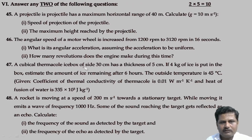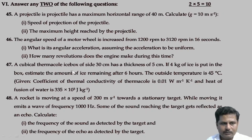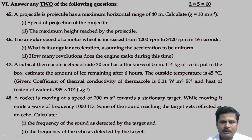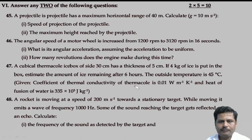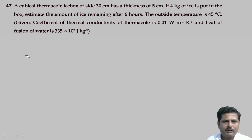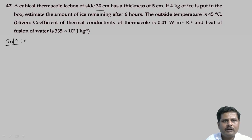Next problem: A cubical thermocool ice box of side 30 centimeters has a thickness of 5 centimeters. If 4 kg of ice is put in the box, estimate the amount of ice remaining after 6 hours. The outside temperature is 45 degrees Celsius. Thermal conductivity of thermocool and latent heat of fusion of water are given.